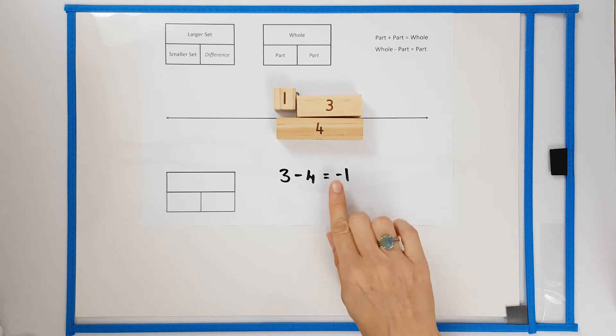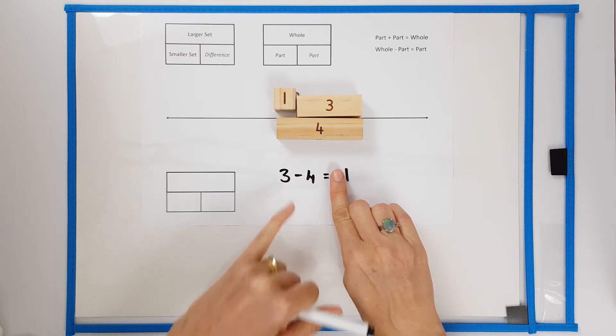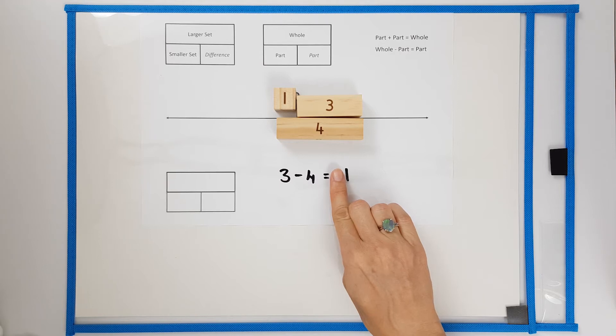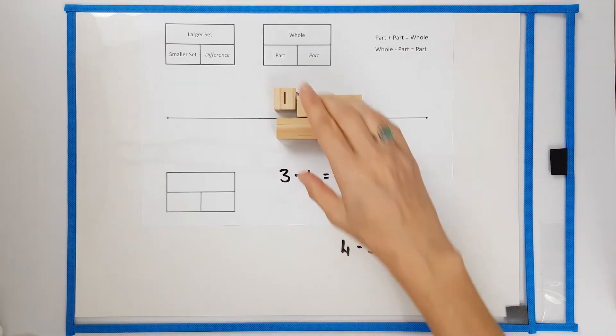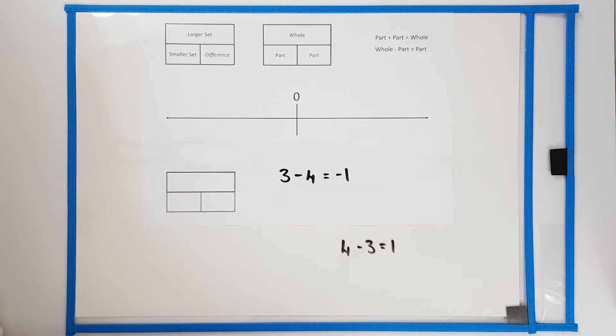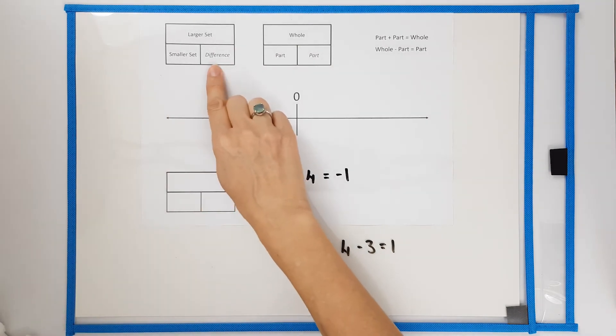In order to stop students incorrectly writing this some people say you always put the big number first. This is not true.